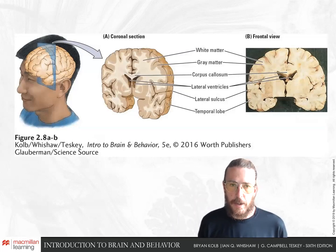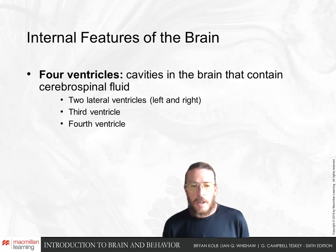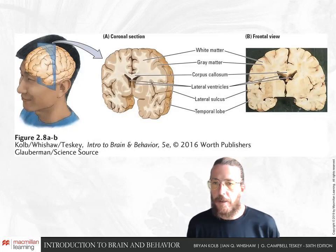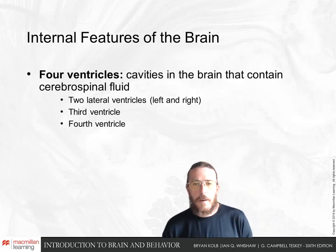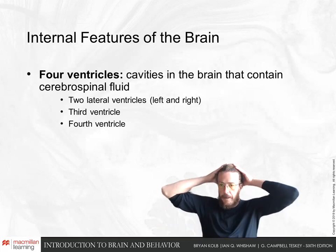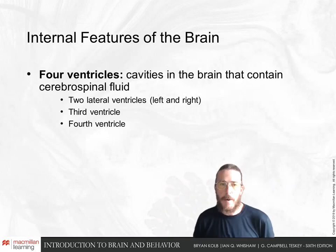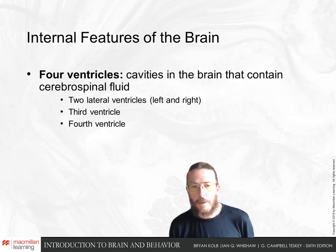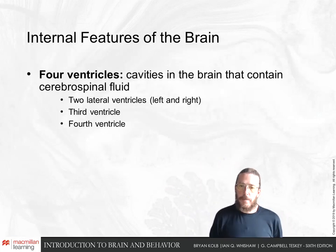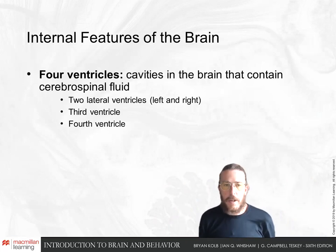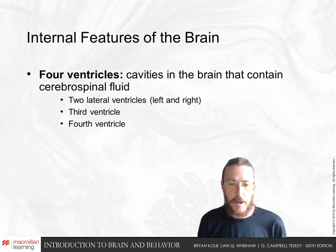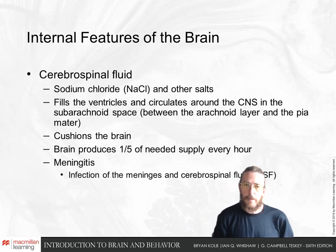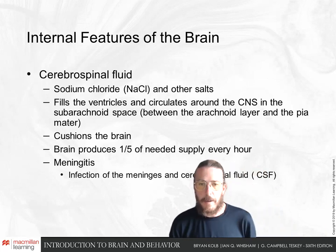The corpus callosum of axons connects the two hemispheres together, visible in a coronal view. Also visible in these views are holes in the brain called ventricles, filled with cerebrospinal fluid that also fills the subarachnoid space outside the brain. We have two lateral ventricles like horns through the inside of the brain, and then the third and fourth ventricles traveling down the brain stem toward the spinal cord. These make a continuous space with the subarachnoid space, and the fluid cushions the brain.